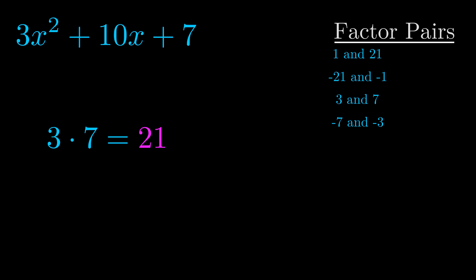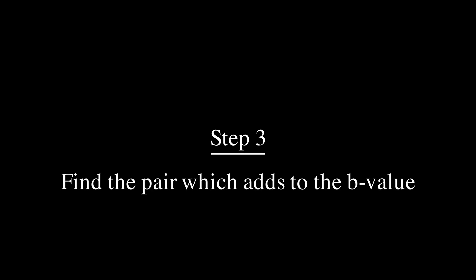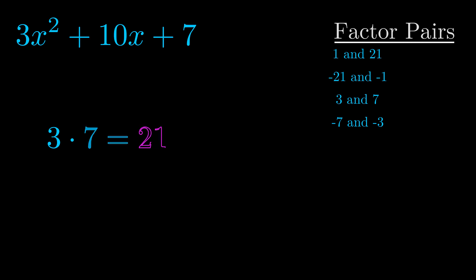Now once you have these factor pairs, the goal is to find which of these pairs adds to the b value. The b value is the coefficient on the x term—that's the middle term, the one that we haven't done anything with yet. And really, this is the only factor pair that we need.